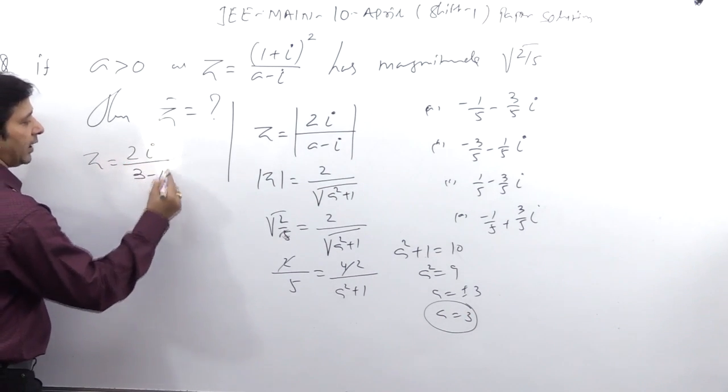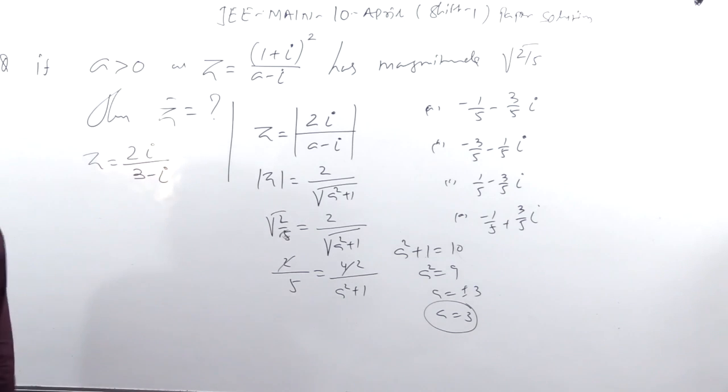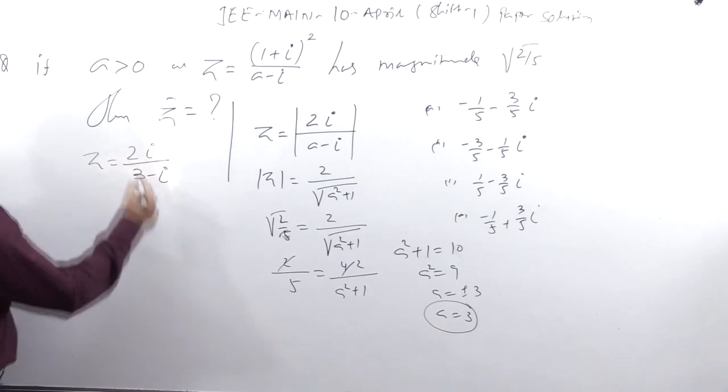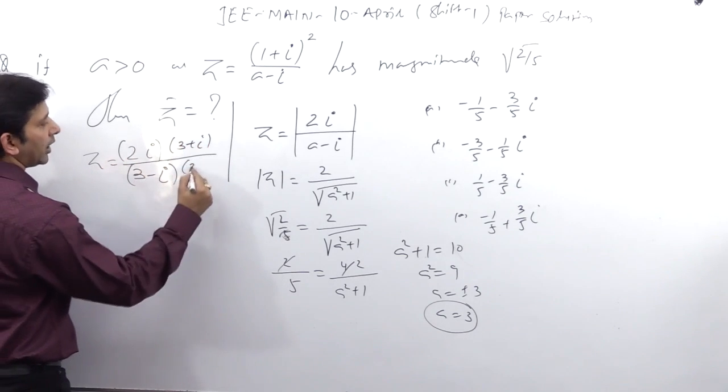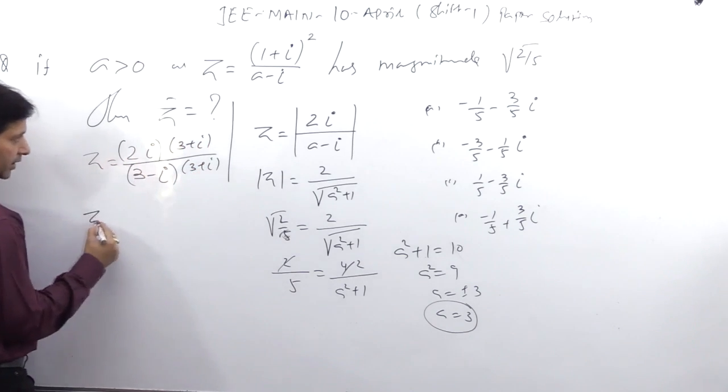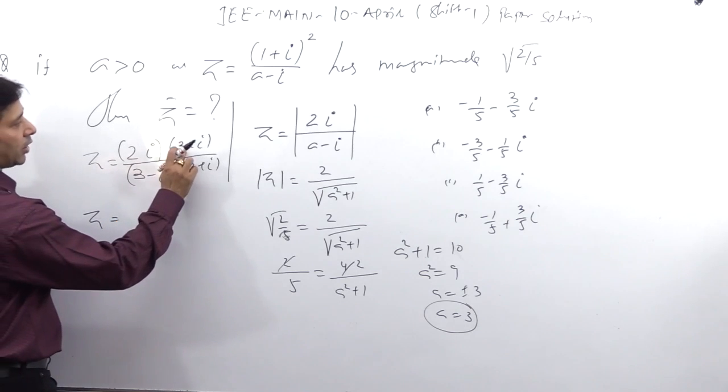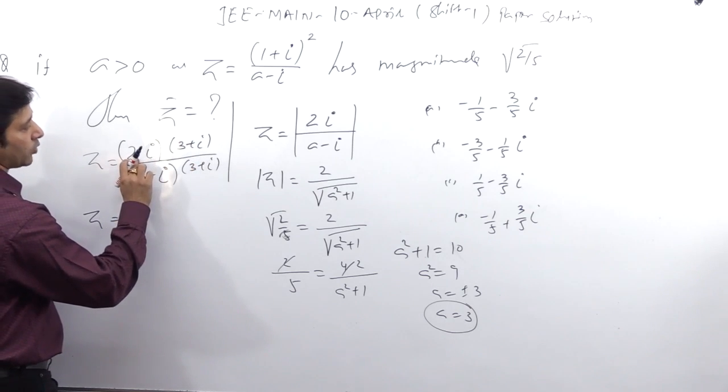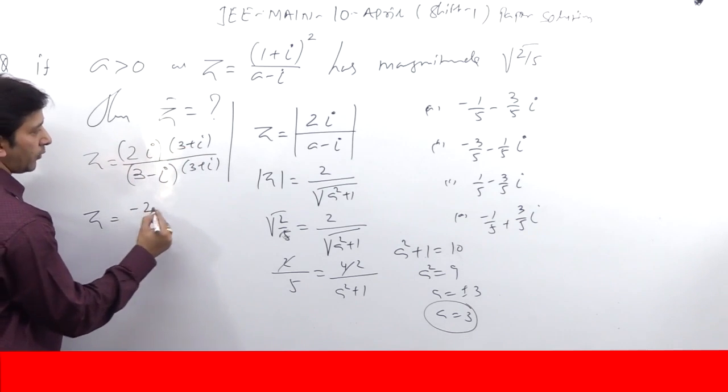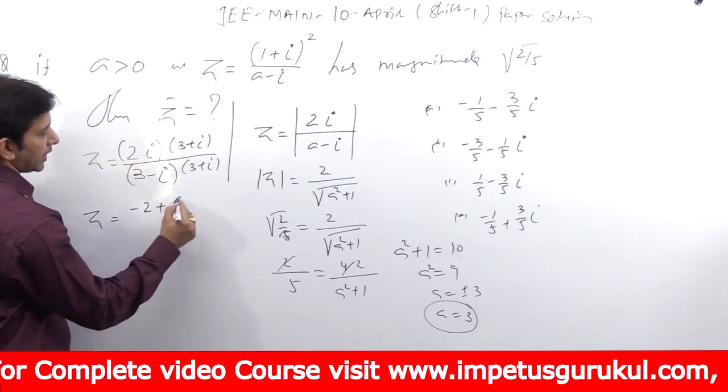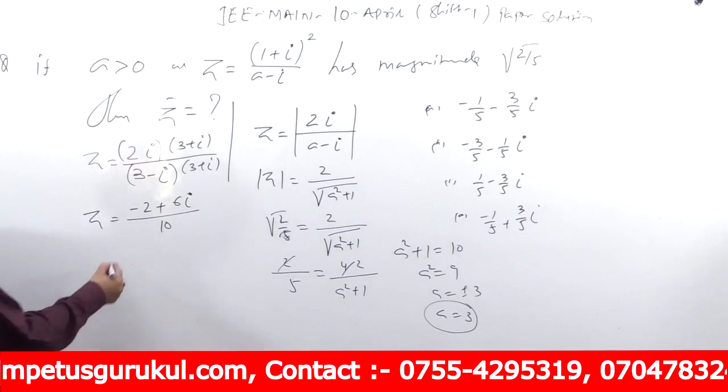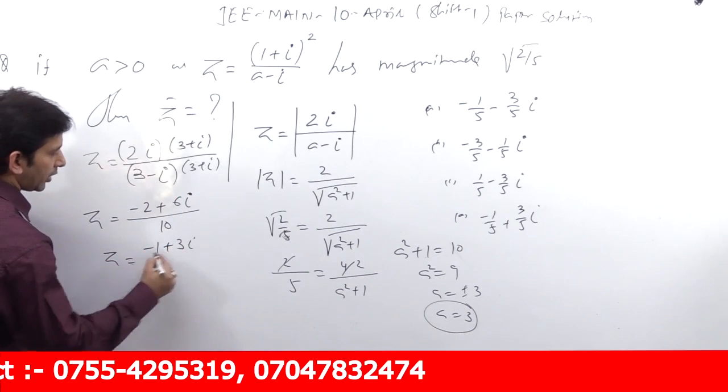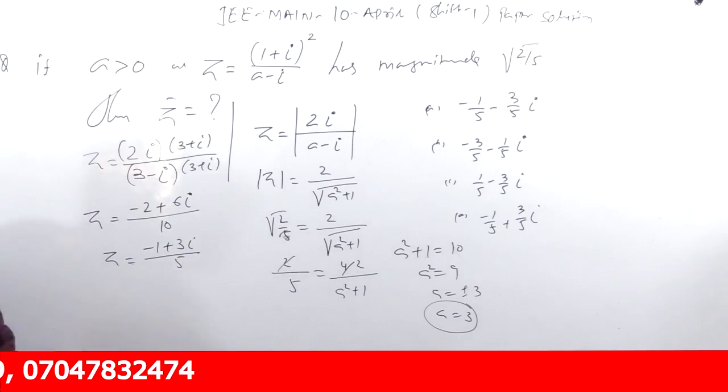Iska matlab aapke paas z equal to 2 iota upon (3 - iota). Rationalize kijiye, 3 plus iota into 3 plus iota. Multiply kiya to 6 iota plus 2 iota² means minus 2 plus 6 iota by 10, means basically z equal to (-1 + 3 iota) upon 5.